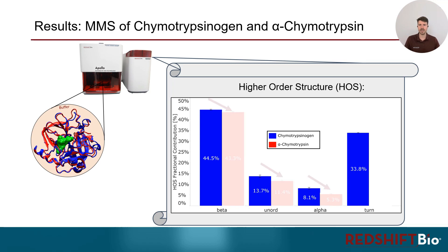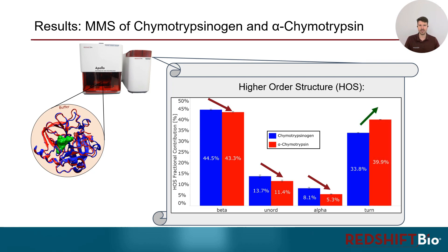Upon enzyme activation, beta sheet, unordered and helical contributions decrease, where we find an increase in turn structure.